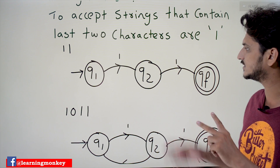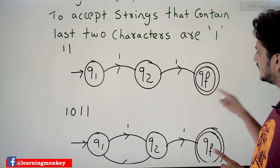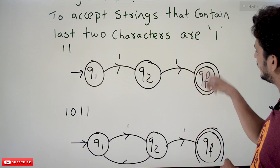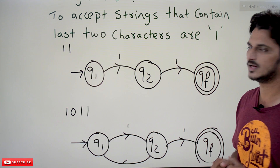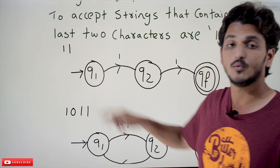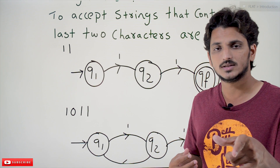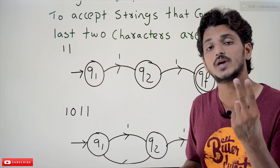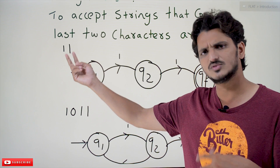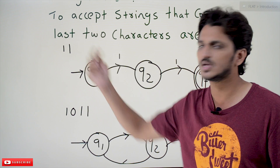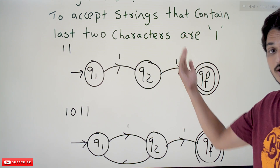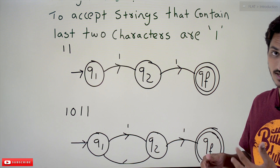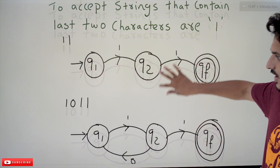From q1 to qf — we come to qf state whenever we find two consecutive ones. The final state is marked with two circles in DFA. So this is our final state. Whenever we find two ones we accept that string, because our logic is to accept strings where the last two characters are ones. Whenever we find two consecutive ones, we move up to qf.